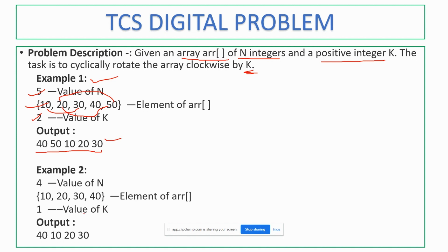In case the k value is 1, then each and every element rotates by k positions. The 10 will come here, the 20 will come here, the 30 will come here, and the 40 will come here. This is the output we will get.